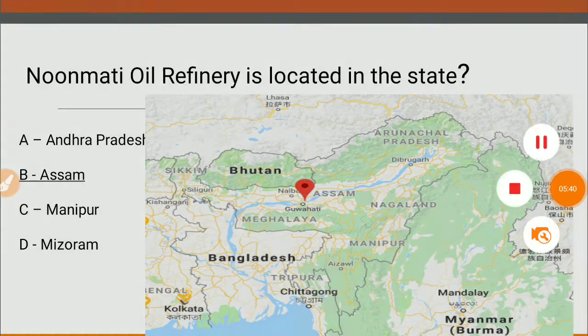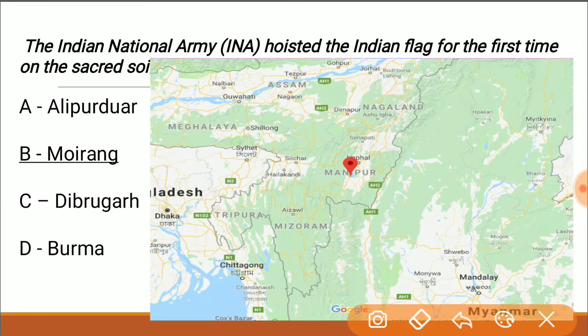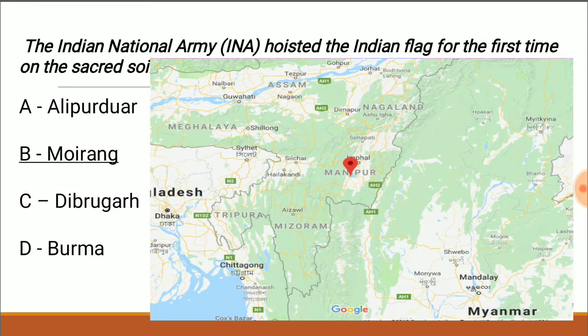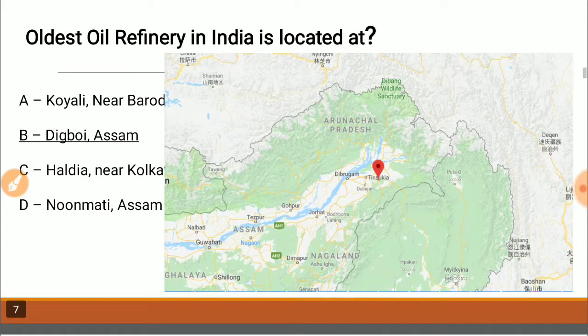The Indian National Army hoisted the Indian flag for the first time on the sacred soil of which place? The correct answer is Manipur. There is a small town called Moirang — that is the place where the Indian National Army hoisted the Indian flag for the first time.